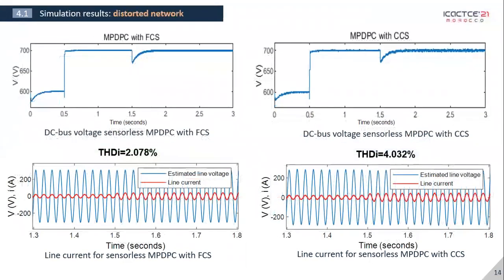Now, for distorted network, other than the slight ripples in DC voltage, there's hardly any change. The line current distortion is still low.